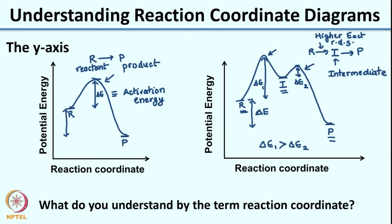So from the reaction coordinate diagram you get information about the energy of your reactant and product, the intermediates present, and their relative energy with respect to reactant and product. Now let us try to understand what the term 'reaction coordinate' on the x-axis actually means. Please pause the video, look at these graphs carefully, and think about what property of the reaction the reaction coordinate signifies. Understanding the reaction coordinate is extremely important for grasping the principles of physical organic chemistry.